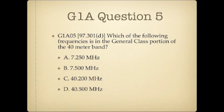Question 5. Which of the following frequencies is in the general class portion of the 40 meter band? A. 7.250 megahertz. B. 7.5 megahertz. C. 40.2 megahertz. Or D. 40.5 megahertz.